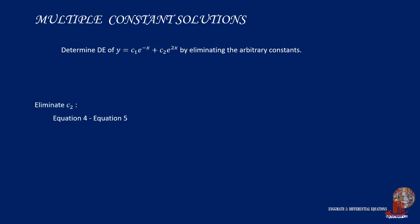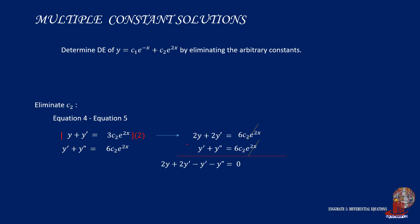At this point, let us subtract equation 5 from equation 4. But first, note that we need to multiply the fourth equation by 2. By doing so, we can proceed with the subtraction. Note that 6c2 times e raised to 2x will be cancelled. This results in 2y plus 2y' minus y' minus y'' is equal to 0. Simplified, we get 2y plus y' minus y'' is equal to 0.